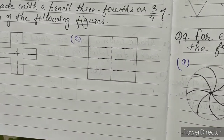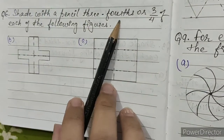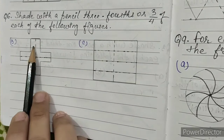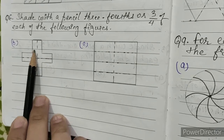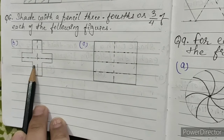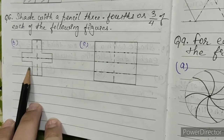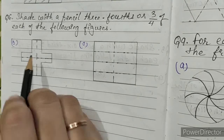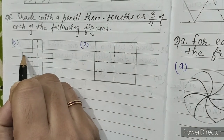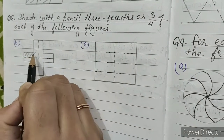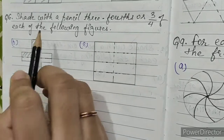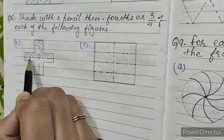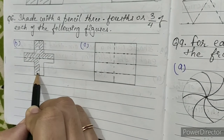Question number 6: shade with a pencil three fourths, or 3 by 4, of each of the following figures. B: this figure is divided into 4 equal parts — 1, 2, 3, 4. We have to shade three portions of this figure: 1, 2, 3.